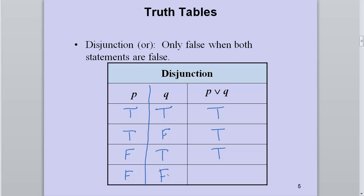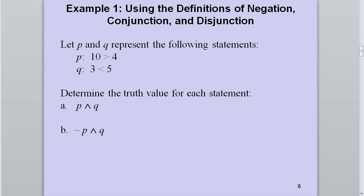When I don't have at least one true, it's false. That covers the disjunction. Now let P and Q represent specific statements: is 10 greater than 4? Yes, that's true — so I know the truth value of P. Is 3 less than 5? Yes, that's true — so I know the value of Q. If P is true and Q is true, then the conjunction is true because both statements are true.